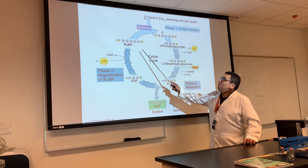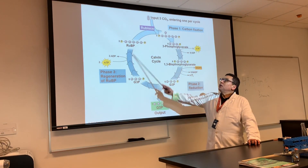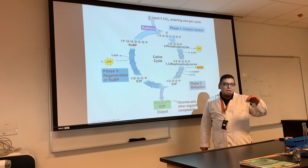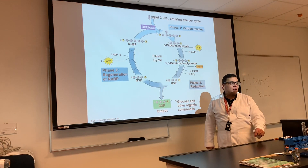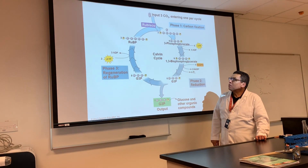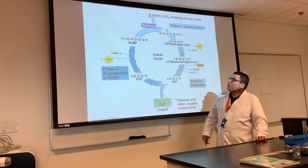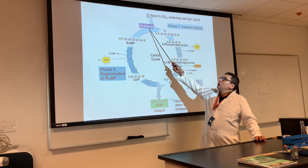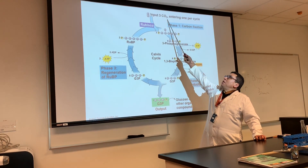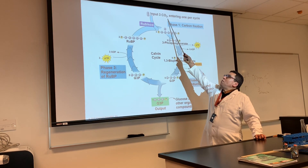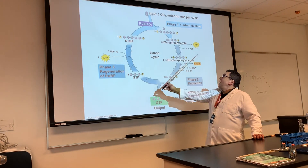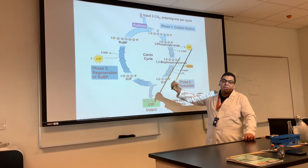Notice that at the end of the cycle, you're regenerating RuBP, just like oxaloacetate was regenerated in the citric acid cycle. So here are the players: RuBP, RuBisCO the enzyme, carbon dioxide from the stomata, and the ATP and NADPH from the light reaction.